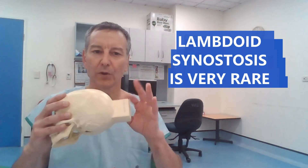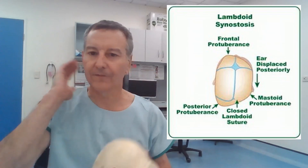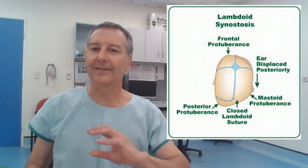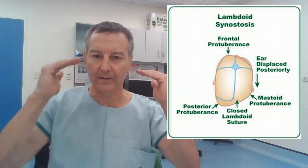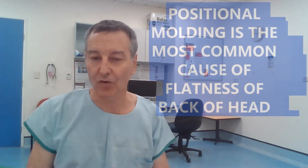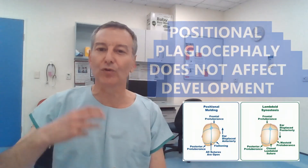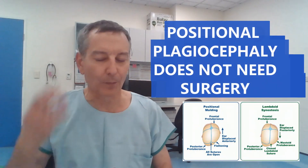The rarest type of craniosynostosis is fusion of the lambdoid suture — you can't see it easily in this model. The lambdoid suture is between the occipital bone at the back and the parietal bone just in front of the ear. When it fuses early, it can cause flatness on one side of the back of the head. It can also result in a difference in ear position: one ear may be at a slightly different level, and when viewed from above, one ear will be slightly in front of the other. Lambdoid synostosis is very rare. We do see many children with flatness of the back of the head in the craniofacial clinic, but that is usually just positional molding, called positional plagiocephaly. Lambdoid craniosynostosis needs an operation, whereas positional plagiocephaly does not.